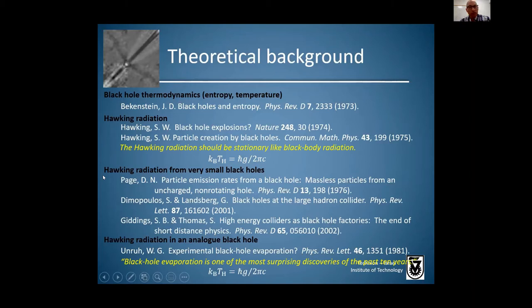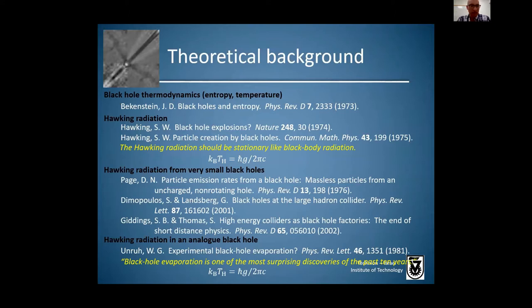The problem with observing Hawking radiation from a real black hole is that the Hawking temperature should be extremely low — less than a micro Kelvin for a black hole of a few solar masses — and so it will be overpowered by other sources of radiation. However, perhaps one can find very small black holes for which the Hawking temperature will be higher, such as primordial black holes created in the early universe, or maybe black holes created at the LHC. There are ongoing searches at the LHC for black holes.